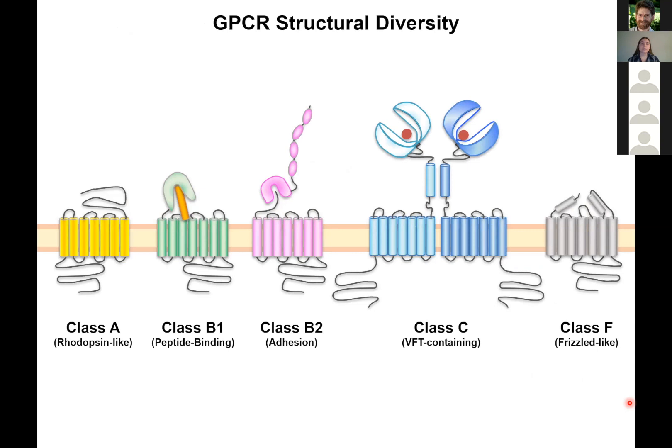We can categorize GPCRs based on their sequence and structural homology into different classes or families. The class A receptor is one of the simpler receptors and most historically well-studied. The class B receptors are peptide binding receptors. They can either bind exogenous peptides or they can bind internal peptides, such as the adhesion GPCRs, which are also known for having long, large extracellular domains. There's also the class C and class F receptors. Today, I will be focusing mostly on the class C receptor family.